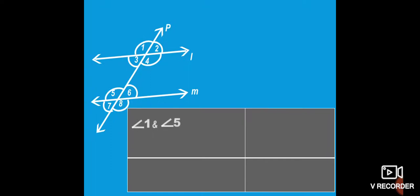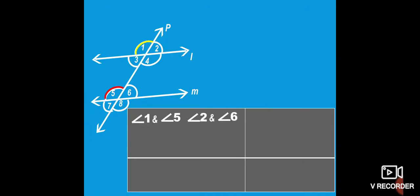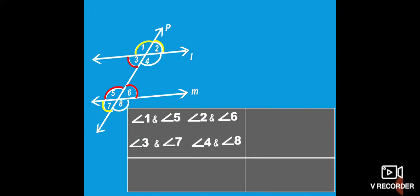Next, in the same figure, we can see angle 1 and angle 5. Angle 1 is on the left side on line L, and angle 5 is on the left side on line M — they are at the same position on the transversal. Similarly, angle 2 and angle 6 are at the same position. Another pair: angle 3 and angle 7. And angle 4 and angle 8. These four pairs are on the same position, so their name is corresponding angles — pairs of corresponding angles.